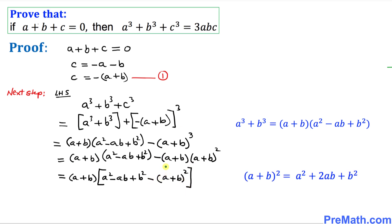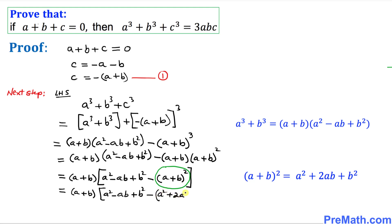Now I can expand the a plus b squared part using the well-known identity: a plus b squared equals a² plus 2ab plus b². So we have a plus b times a² minus ab plus b², with a minus outside, giving us a² plus 2ab plus b² inside the bracket.